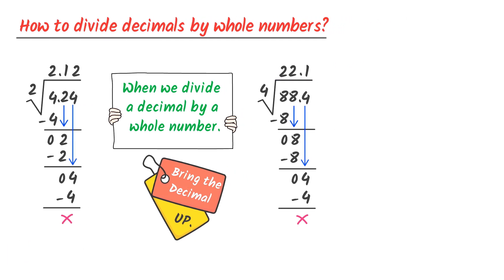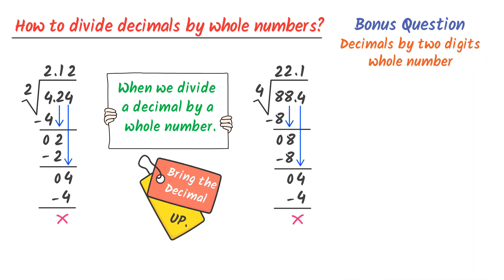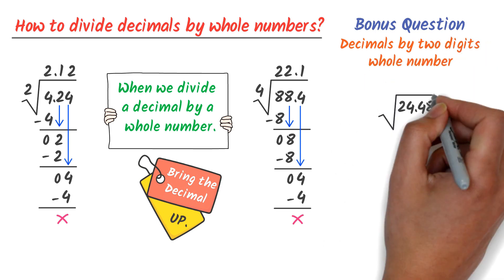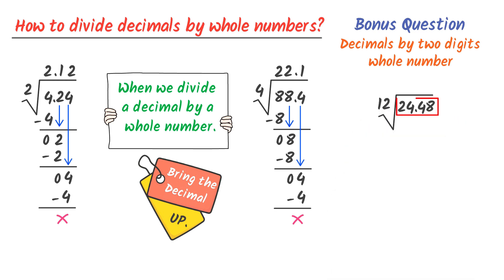Finally, let me teach you one bonus question: dividing decimals by two-digit whole numbers. For example, 24.48 divided by 12. Here, 24.48 is a decimal number and 12 is a whole number. Hence, I bring this decimal straight up. I select two digits in the dividend, like 24, because there are two digits present in the divisor. We know that 12 times 2 is equal to 24, thus 24 minus 24 is equal to 0.